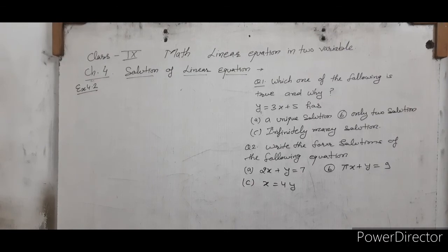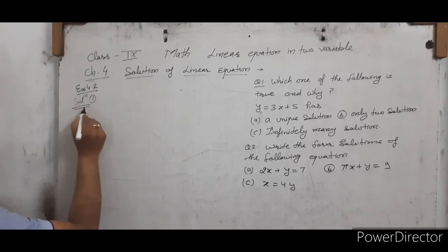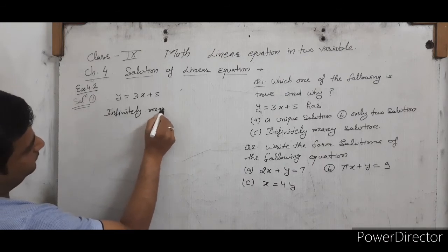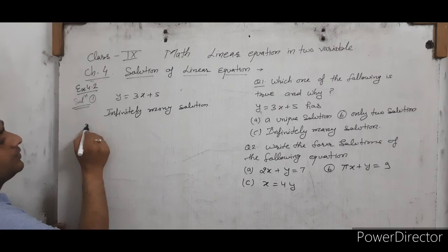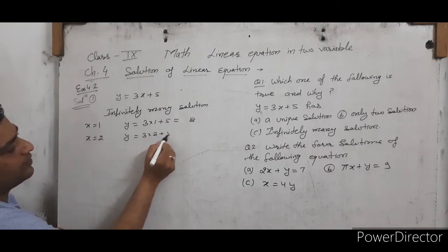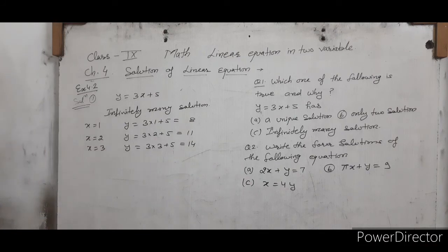Exercise 4.2, solutions of linear equations. Question 1: Which of the following is true — Y equals to 3X plus 5 has a unique solution, only two solutions, or infinitely many solutions? As explained, any single linear equation in 2 variables has infinitely many solutions, since we can substitute infinitely many values of X and get corresponding values of Y.